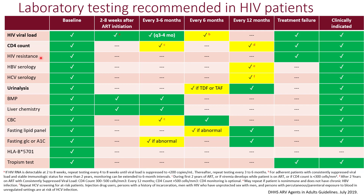HIV resistance testing is needed at baseline but does not need to be repeated unless the patient has treatment failure or there is reason to suspect resistance. Similarly, hepatitis B and C serology is needed at baseline; for patients at ongoing risk, especially those unvaccinated for hep B, annual checking is appropriate. Urinalysis for renal function monitoring should be obtained every 6 months if the patient is on tenofovir — either TDF or TAF — because these are nephrotoxic. Otherwise, urinalysis is needed once a year, or if clinically indicated.